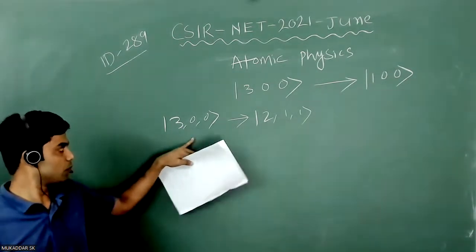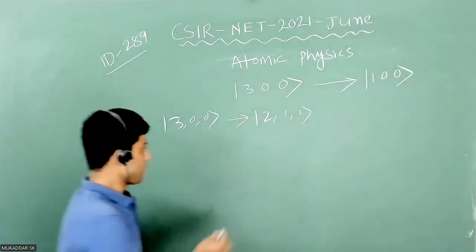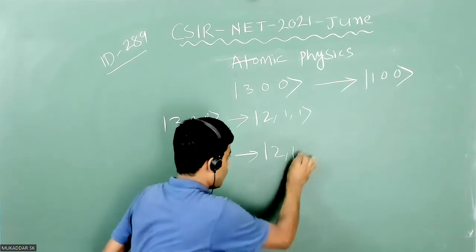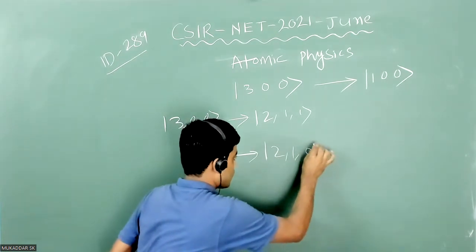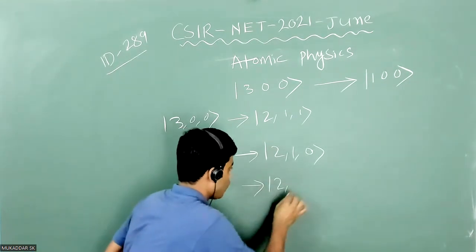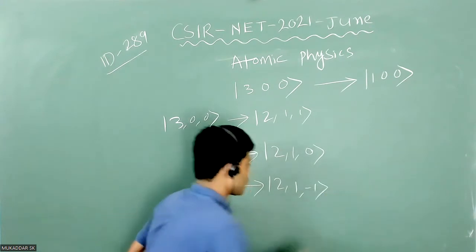So one possible decay mode will be 2,1,1. Another decay mode will be 2,1,0. And another decay mode will be 2,1,minus 1.